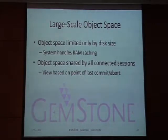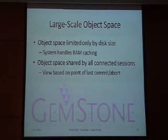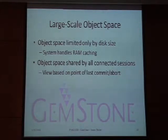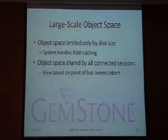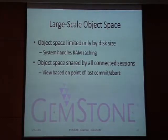The object space is shared by all connected sessions. Each session gets a view of the database as of the point where it acquired the view — the last commit or abort gives you that view. Changes that other sessions make will not leak into your view. In database terminology this is called repeatable reads: each time you read data from the database, even if someone else has changed it, you get the view you had as of when you started your transaction. If you want a new view, you can do a commit or abort.